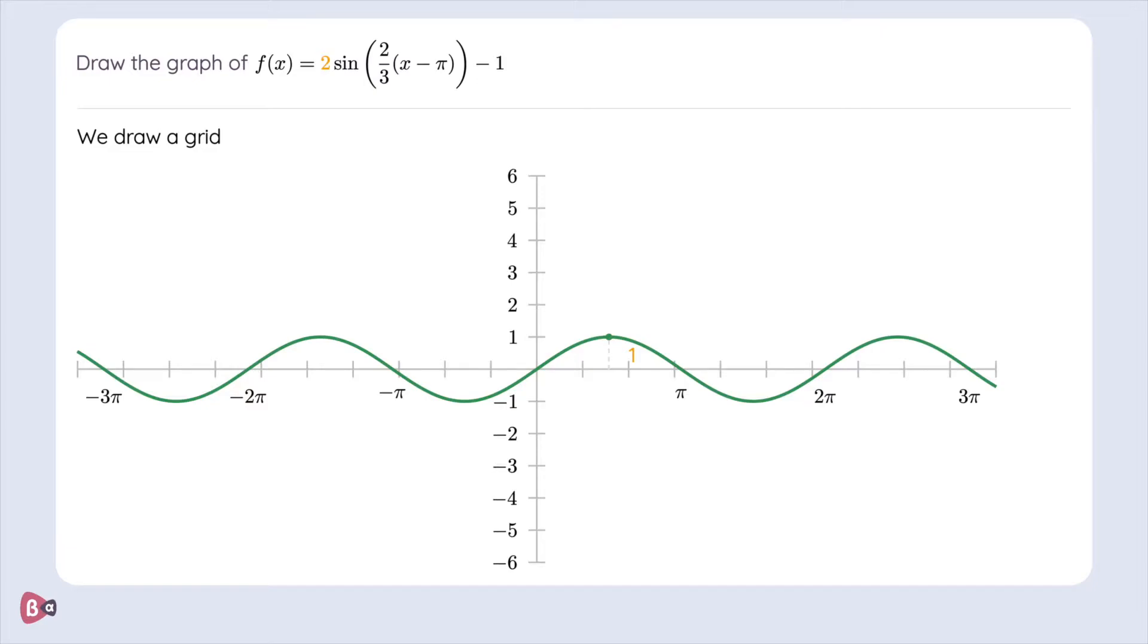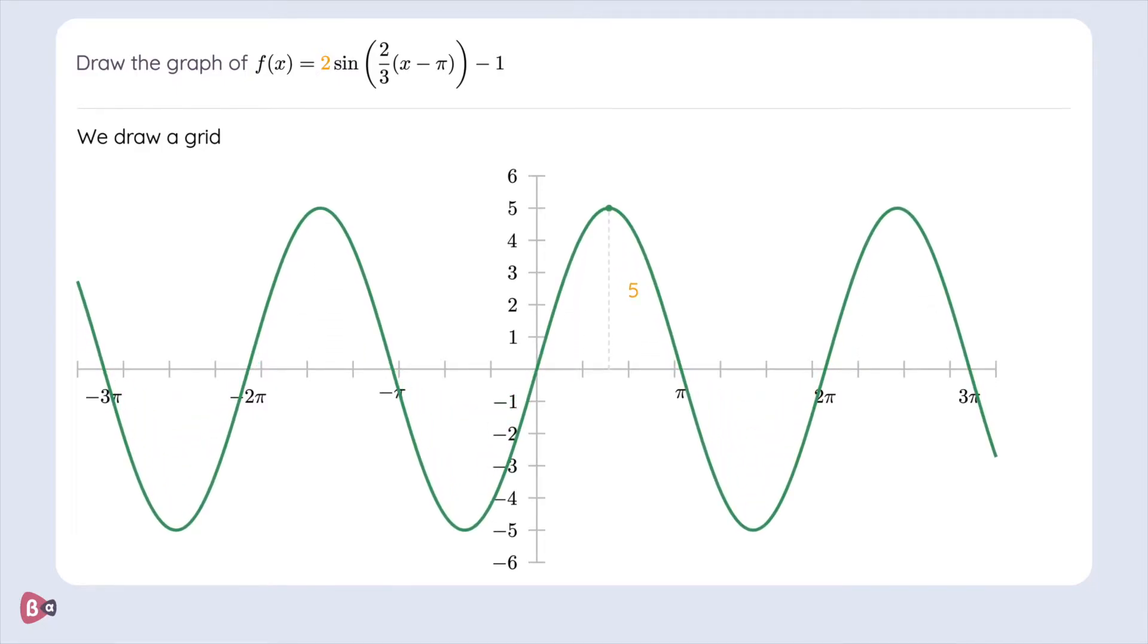Notice that I have colored the 2 in front of the sine orange. The 2 determines the amplitude of the graph. Illustrated here is the ordinary sine wave with an amplitude of 5. In our case the amplitude is equal to 2 so we'll move this to 2.